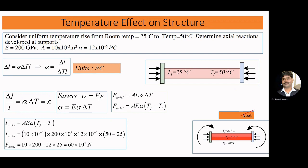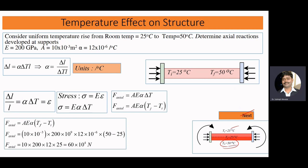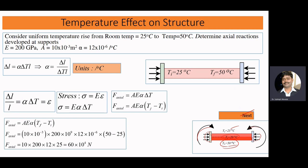Next we are going to discuss the case of non-uniform temperature rise. For example, at the bottom we have 50°C and at the top we have 25°C, with an initial temperature of 20°C. We have to determine how much axial force and how much bending moment is developing in the system, as well as how much deformation is occurring.